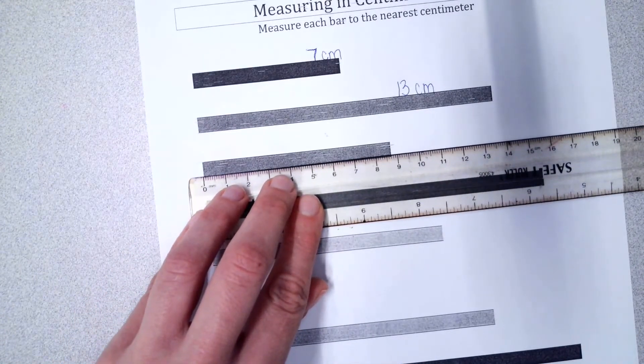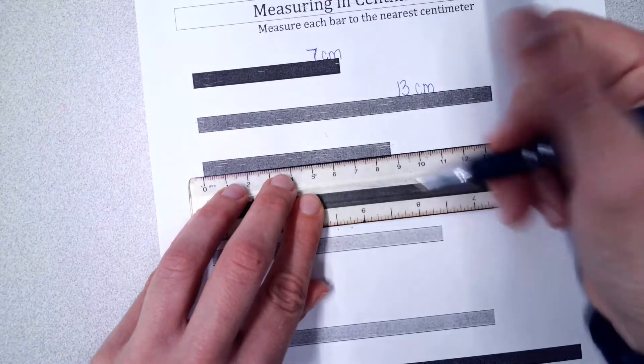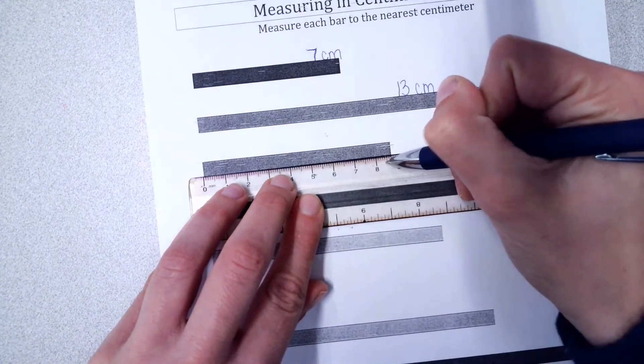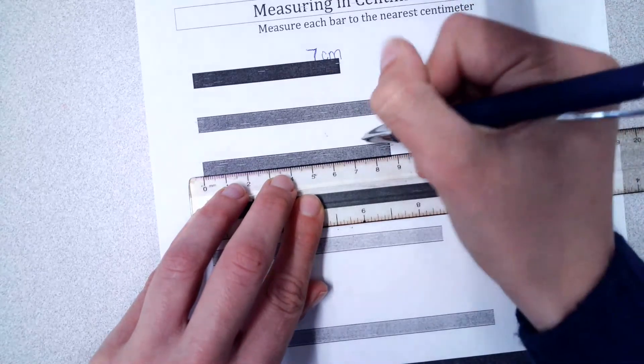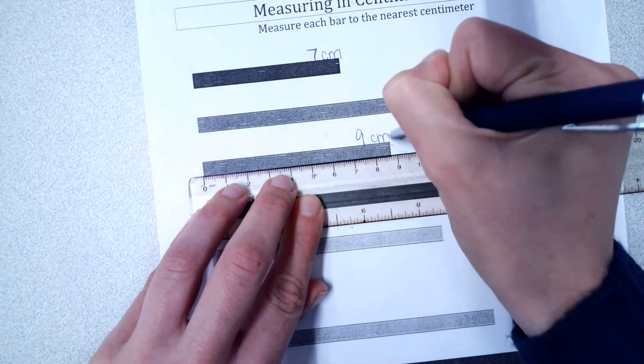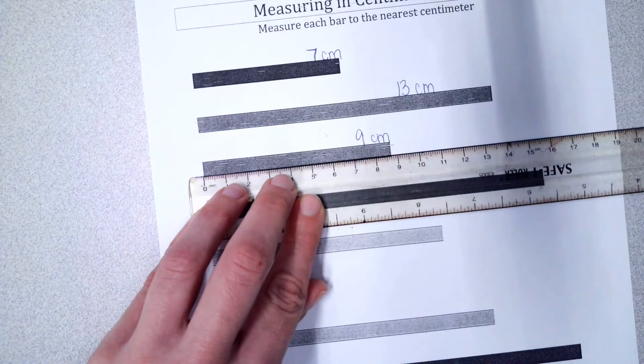Zero tick. This one is past this half mark. So I have to do the number it's closest to, which is nine CM centimeters.